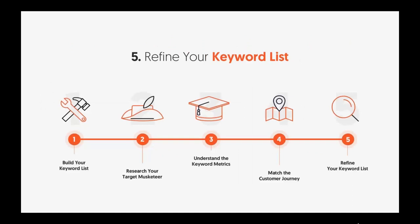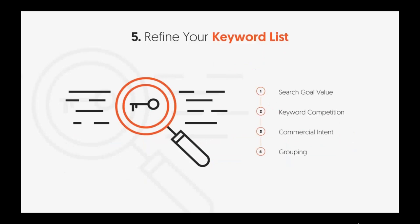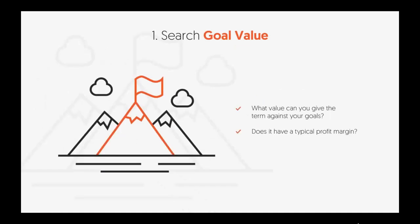The last section is refining your keyword lists. Just because you have keywords doesn't mean they're the right ones. Your list can be so big and overwhelming there's no way you're going to target 5,000 keywords — you need to refine. The way you do this is by looking at search goal value, keyword competition, commercial intent, and grouping. For search goal value: does it have a good profit margin? If you rank for these keywords, can you get enough customers, and are they profitable for you?